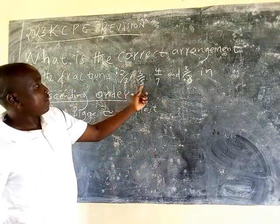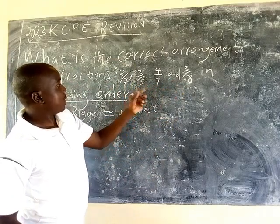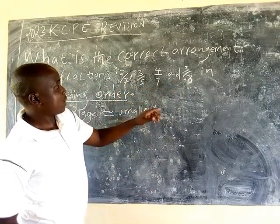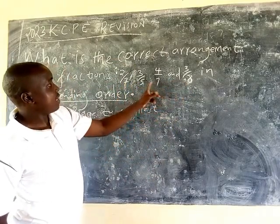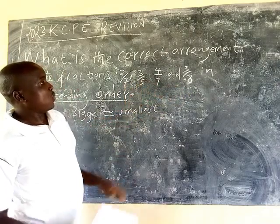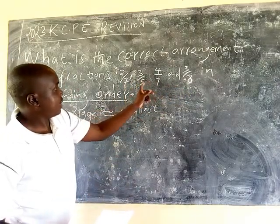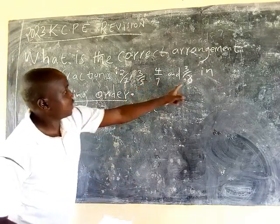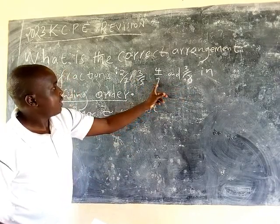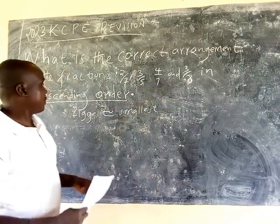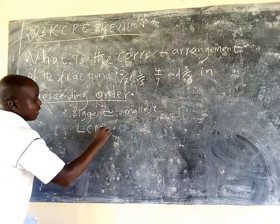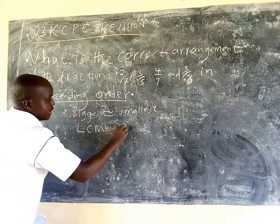The denominators are 7, 5, 7, and 8. We multiply 8 times 7 times 5 to get 280. So the LCM is 280.